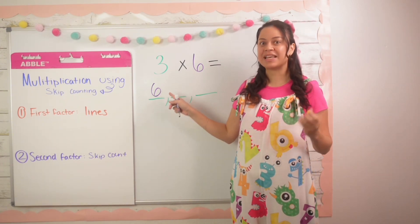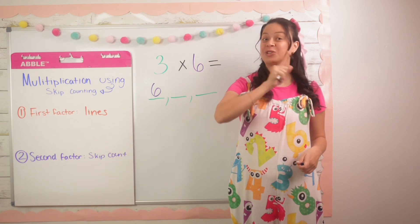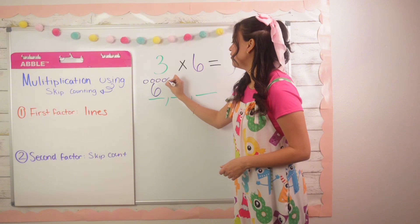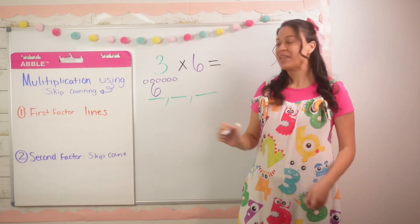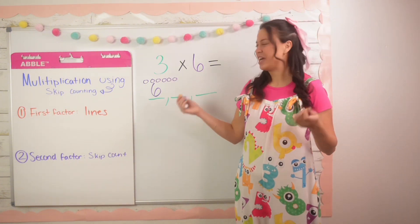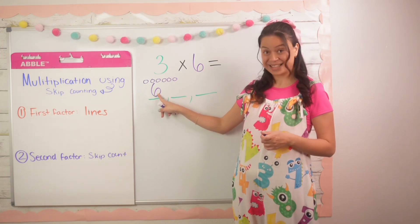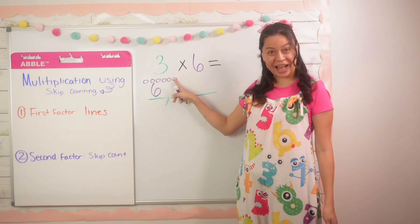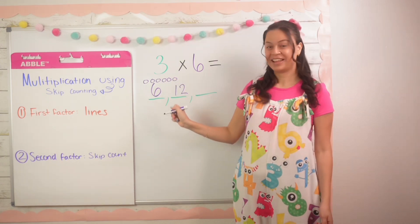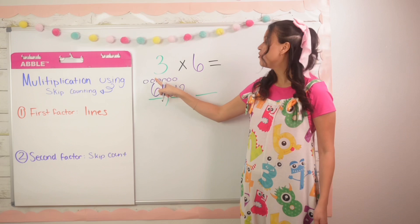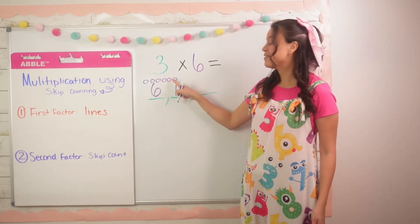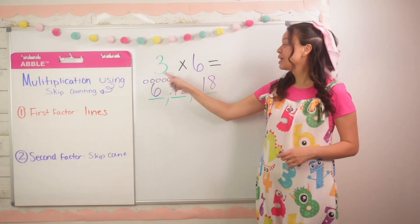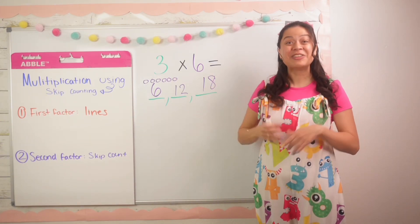Now if you still need help skip counting by six, I like to draw six circles on top: one, two, three, four, five, six. So I have six already, then I count on: seven, eight, nine, ten, eleven, twelve — that's the second line. Then thirteen, fourteen, fifteen, sixteen, seventeen, eighteen. Stop! So three times six is equal to eighteen.